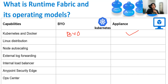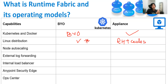Now, Linux distribution. Since in self-managed Kubernetes we are bringing our own Kubernetes, all versions of Linux are supported. But in the case of appliance, it supports Red Hat, CentOS, and Ubuntu — so there is a limitation in appliance. When talking about self-managed Kubernetes, all versions of the Linux distribution are supported.